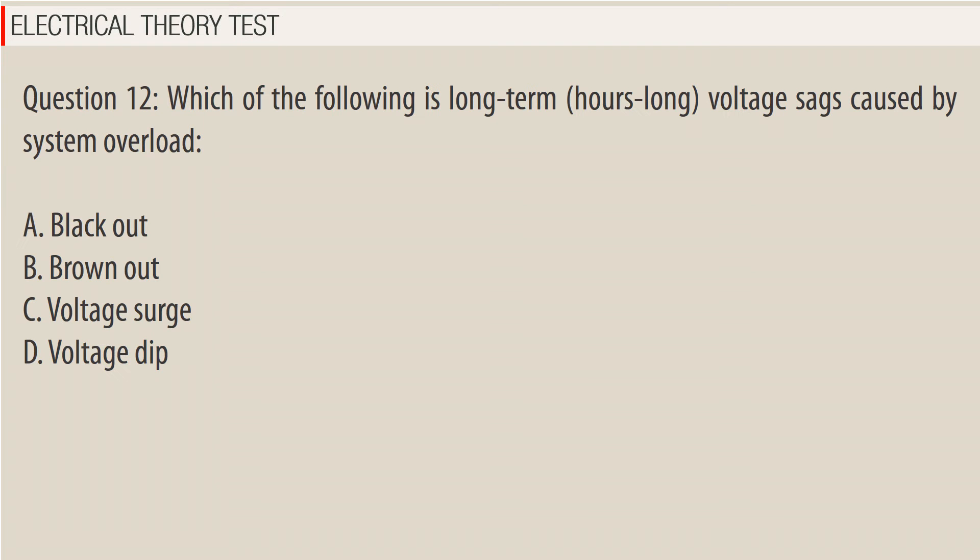Question 12: Which of the following is a long-term, hours-long voltage sag caused by system overload? A. Blackout. B. Brownout. C. Voltage surge. D. Voltage dip.